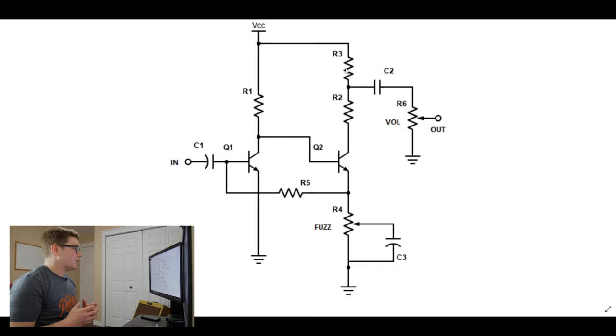Well, essentially, Q1 and Q2 as transistors, they need a specific DC voltage at their collector to turn on. So what these resistors R1, R2, and R3 are doing is essentially setting that voltage at the collectors of Q1 and Q2 to make these transistors work as they would as described in the forward active mode in their datasheet.